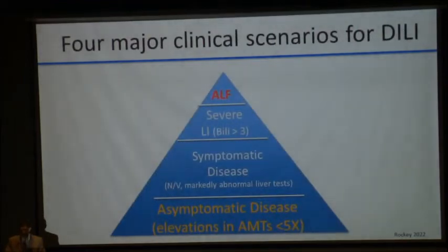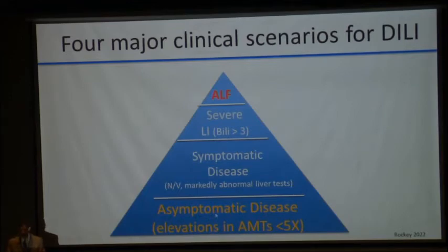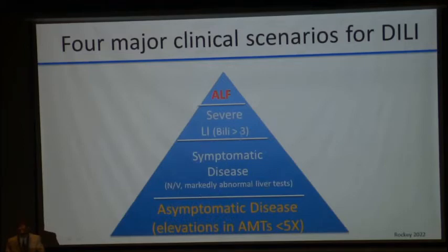The most common clinical scenario in drug-induced liver injury is that patients have asymptomatic disease — these patients often go unseen. Patients can develop symptomatic disease, often with nausea and vomiting and markedly abnormal liver tests. Then we have severe drug-induced liver injury, and of course the most rare and most problematic type of DILI is acute liver failure.